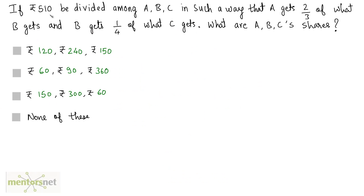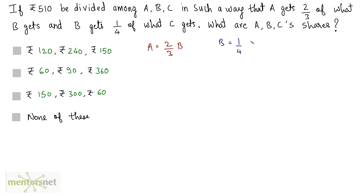If 510 rupees be divided among A, B and C in such a way that A gets 2 thirds of what B gets, and B gets 1 fourth of what C gets, what are A, B and C's shares? A equals 2 thirds of B, and B equals 1 fourth of C.